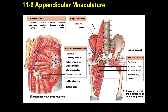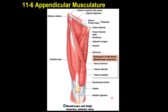The adductor group causes adduction of the hip toward the midline and includes pectineus, gracilis, adductor magnus, adductor longus, and adductor brevis. Gracilis is located most medially; adductor magnus is the largest. The iliotibial tract runs from the ilium to the tibia for stabilization.